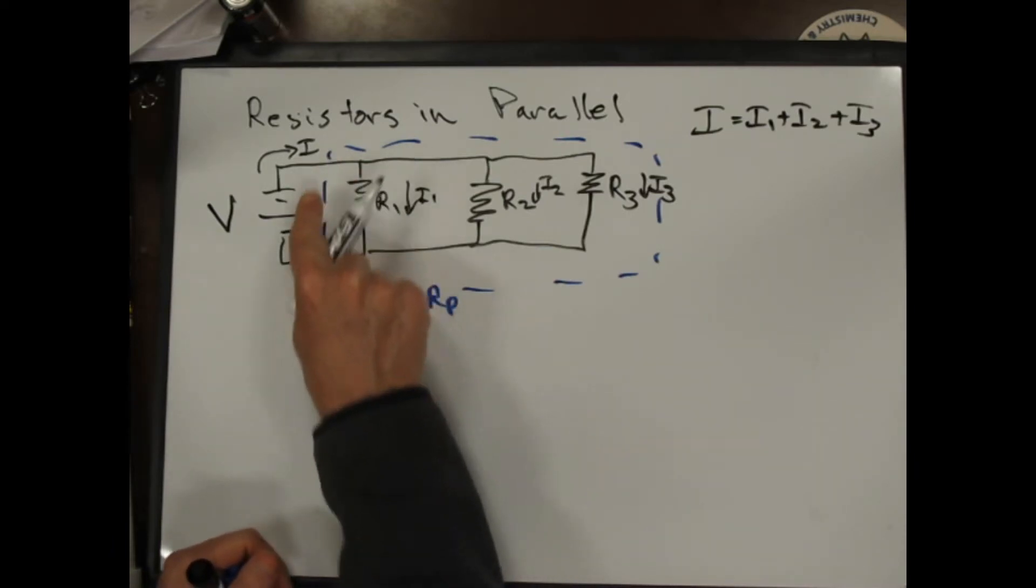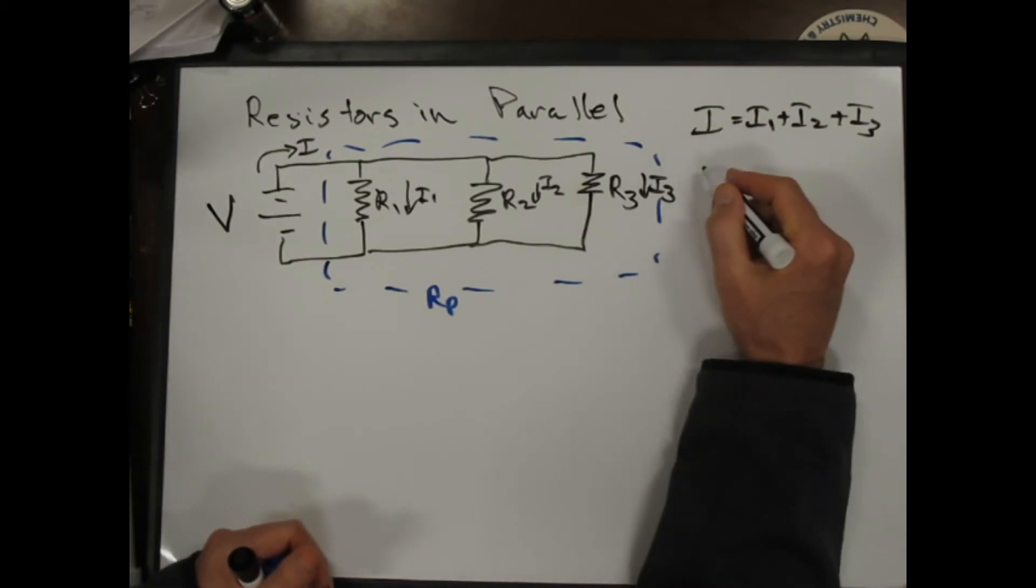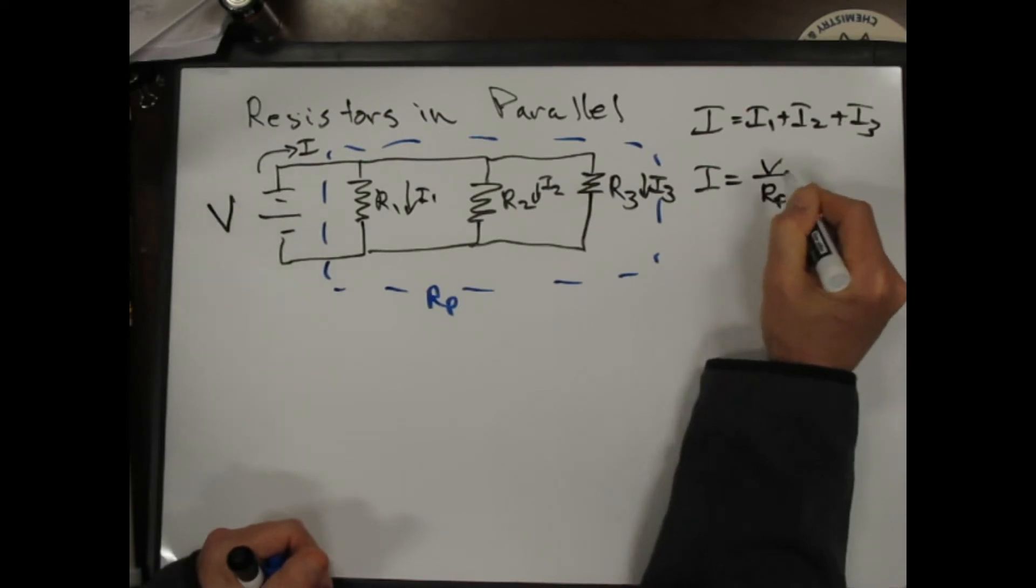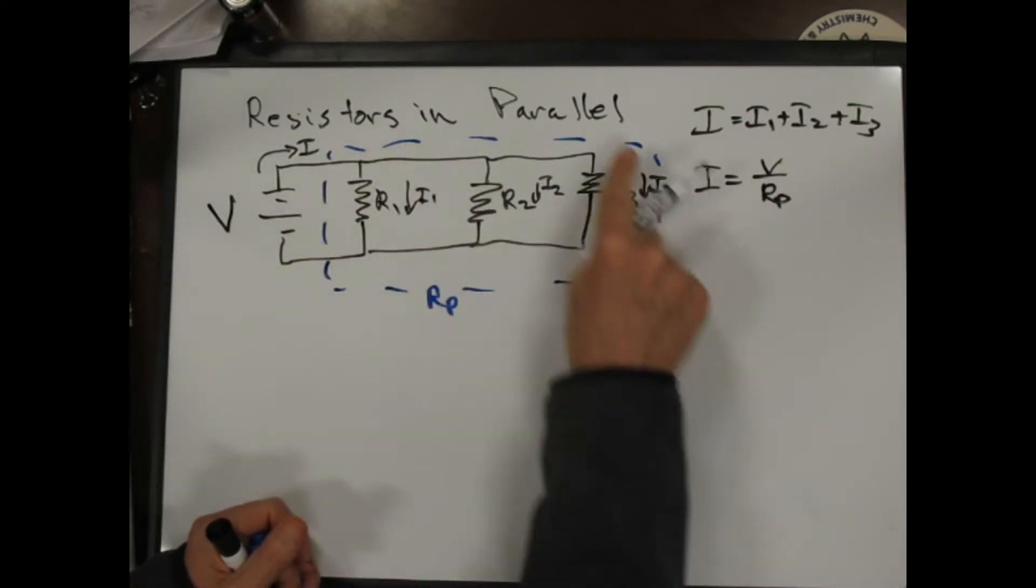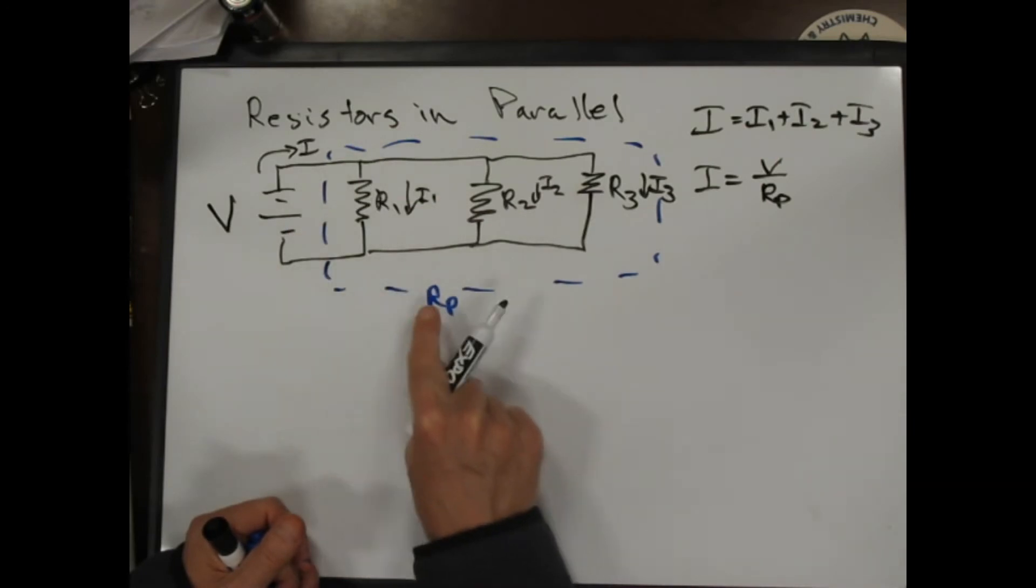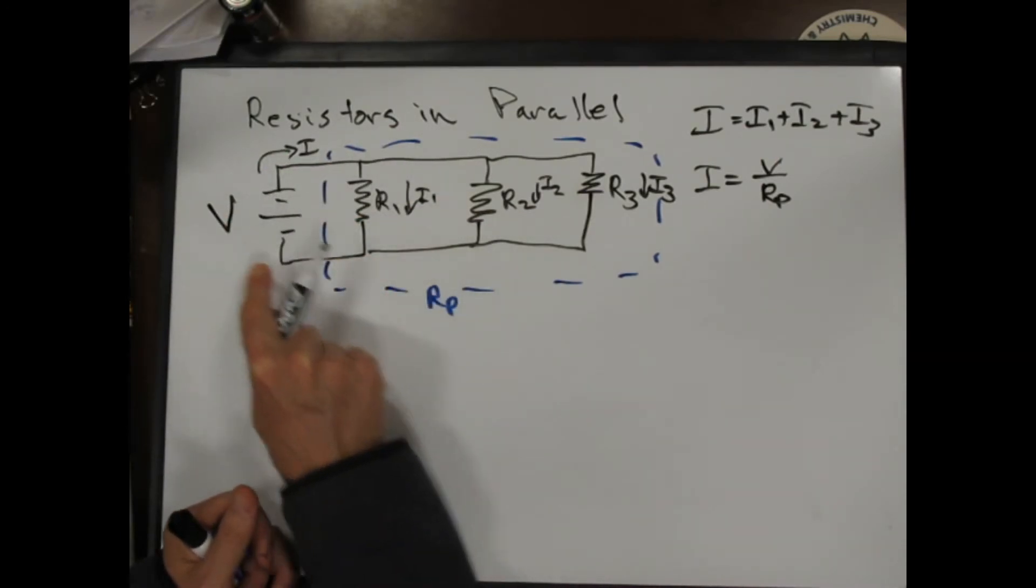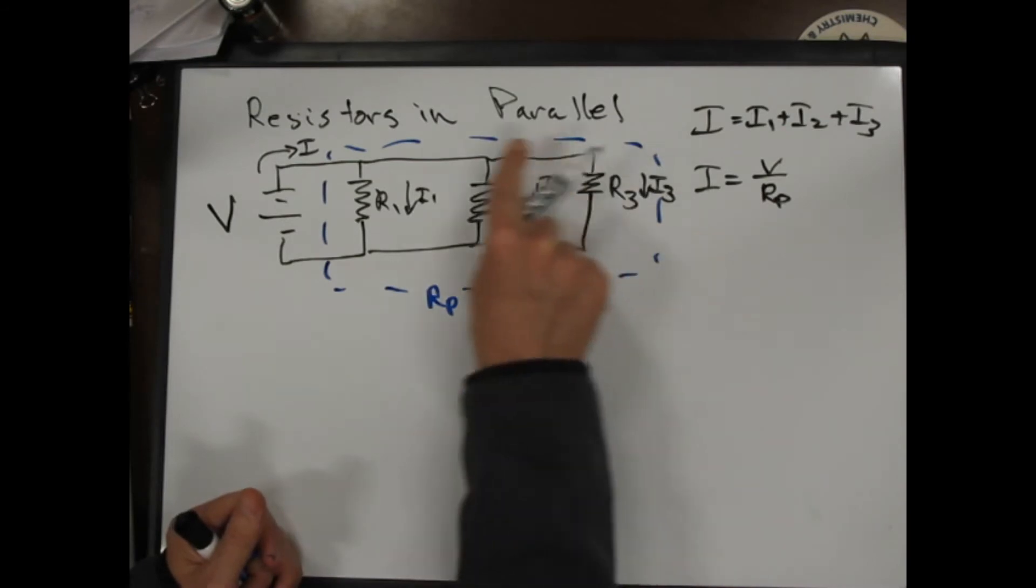If we treat this all as one giant resistor, we can say I is equal to V divided by R parallel. That's to say if we use Ohm's law and just treat this as a black box, then the current through this is the voltage on the circuit divided by the total resistance of this circuit.